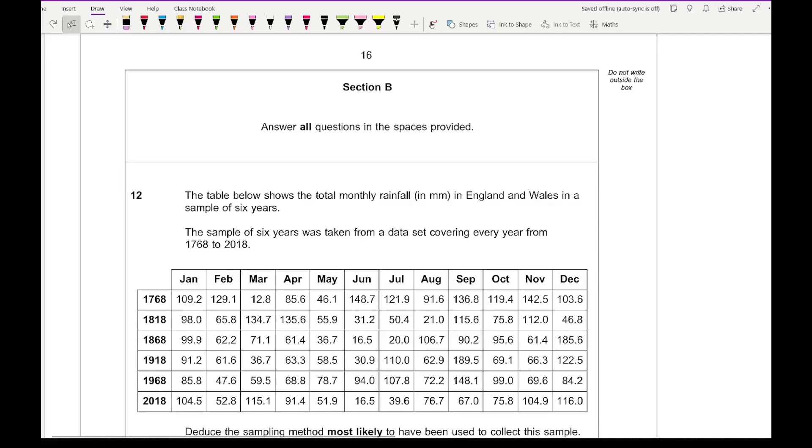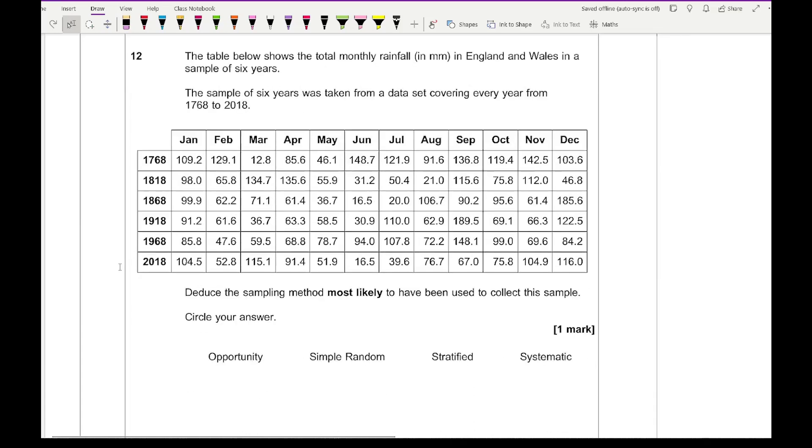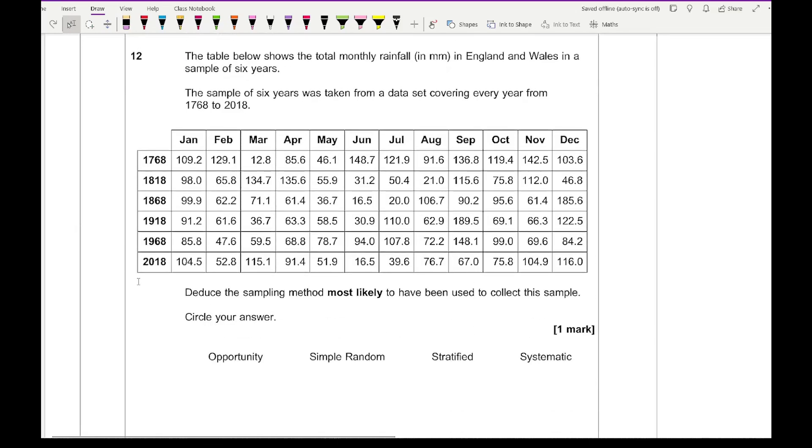Let's get straight into section B of the May 2021 AS maths paper 2. Looking at question 12, it says the table below shows the total monthly rainfall in millimeters in England and Wales in a sample of 6 years. The sample of 6 years was taken from the data set covering every year from 1768 to 2018. It says deduce the sampling method most likely to have been used to collect this sample. The one that we want, because it's so regular and at the same time in every year, the answer we're looking for is going to be systematic.